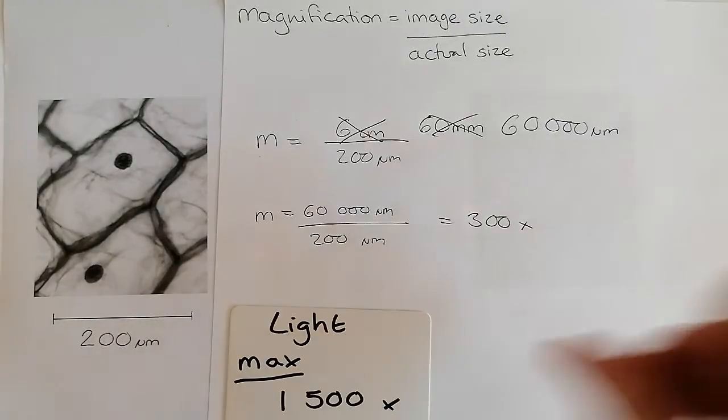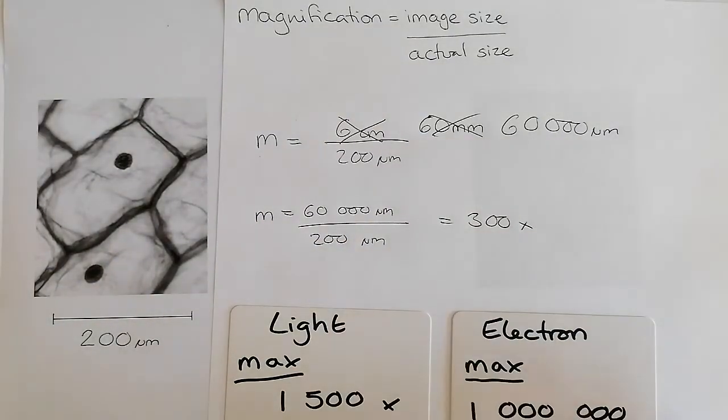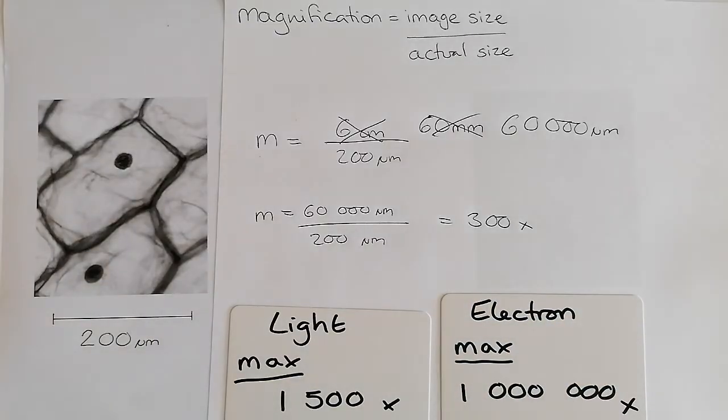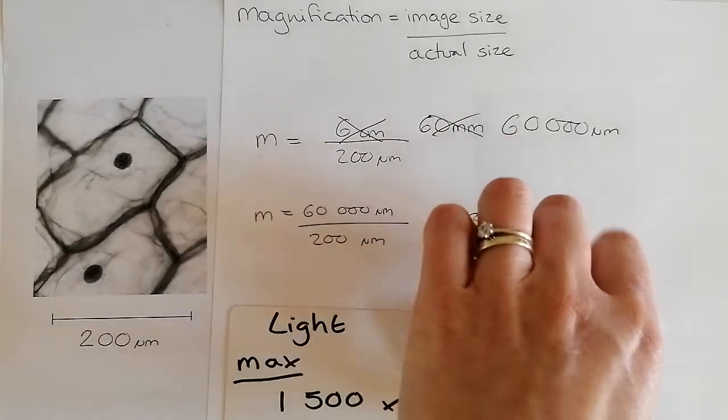Now, light microscopes and electron microscopes can zoom in different amounts. Light microscopes can zoom in up to 1,500. Electron microscopes up to a million. So it's definitely not an electron microscope.